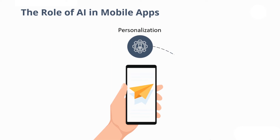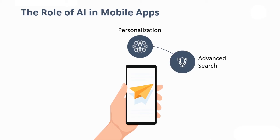Next on the list is advanced search. AI and machine learning let you optimize search options in your mobile applications, making search results more intuitive and contextual for users. Currently, 40% of people use the voice search function at least once every day, and 67% of mobile users already use AI-powered voice assistance.